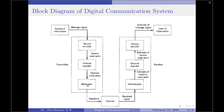Moving on to the next block, we have modulator. The modulator converts the input bitstream into an electrical waveform suitable for transmission over the communication channel. The modulator can be effectively used to minimize the effects of channel noise, to match the frequency spectrum of the transmitted signal with channel characteristics, and to provide the capability to multiplex many signals. The extraction of the message from the information bearing waveform produced by modulation is accomplished by the demodulator. The output of the demodulator is once again a bitstream, and the important parameter of the demodulator is the method of demodulation.